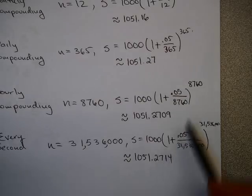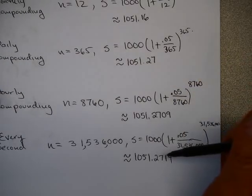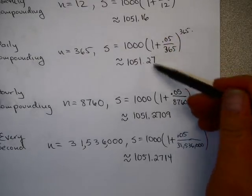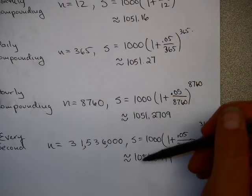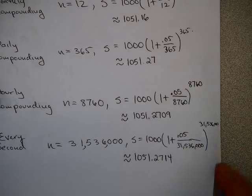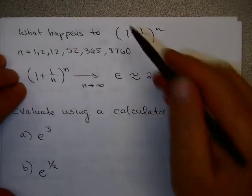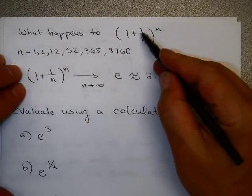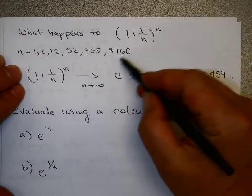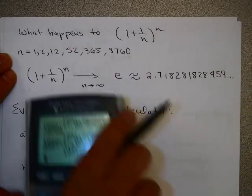You see that as you increase the number of times that you are compounding, this seems to be approaching a value of about $1,051.27. This idea leads us to the idea of what happens to this form, (1 + 1/n)^n, when you use various values.